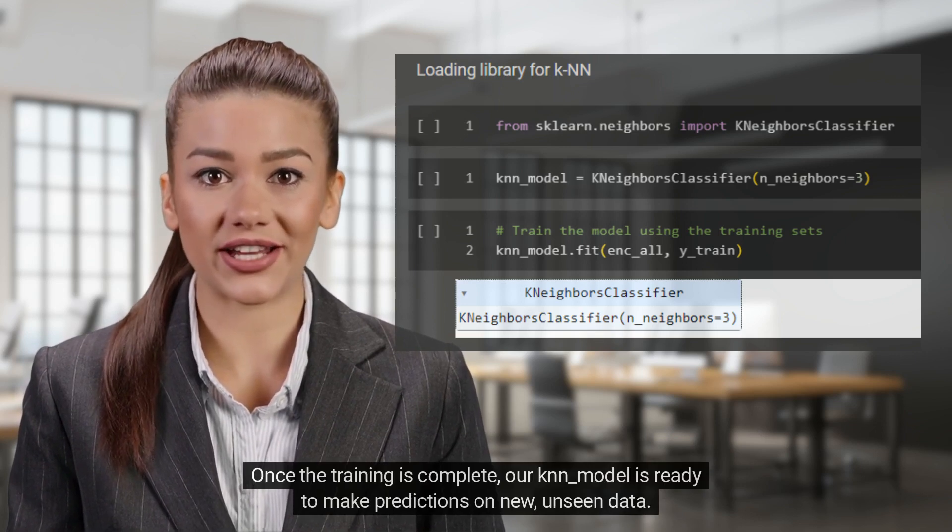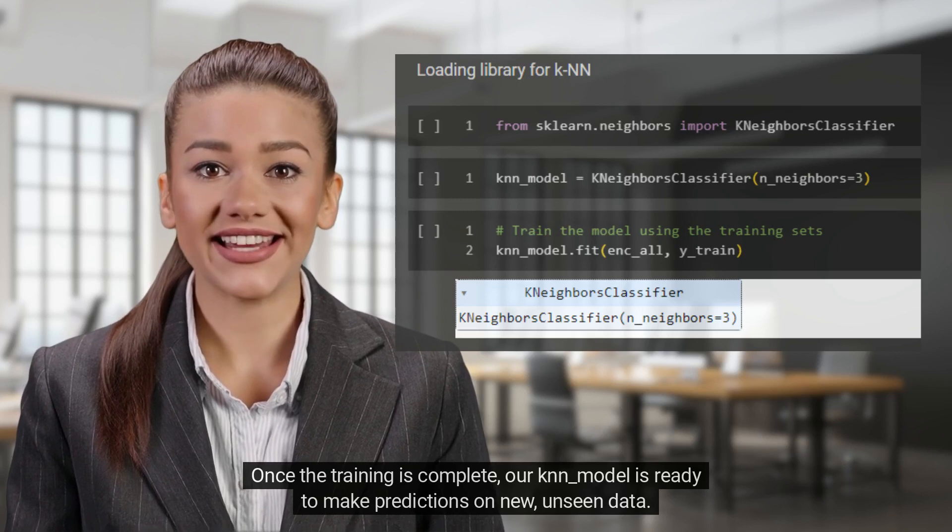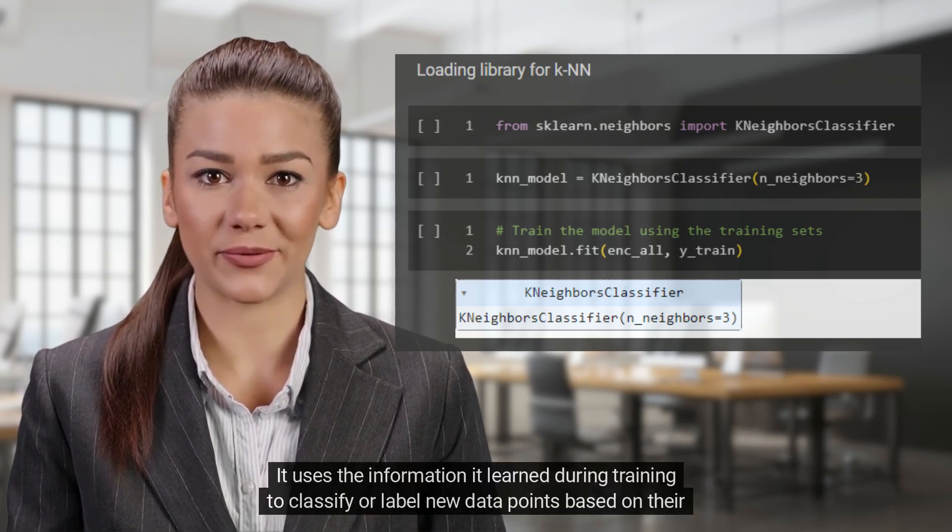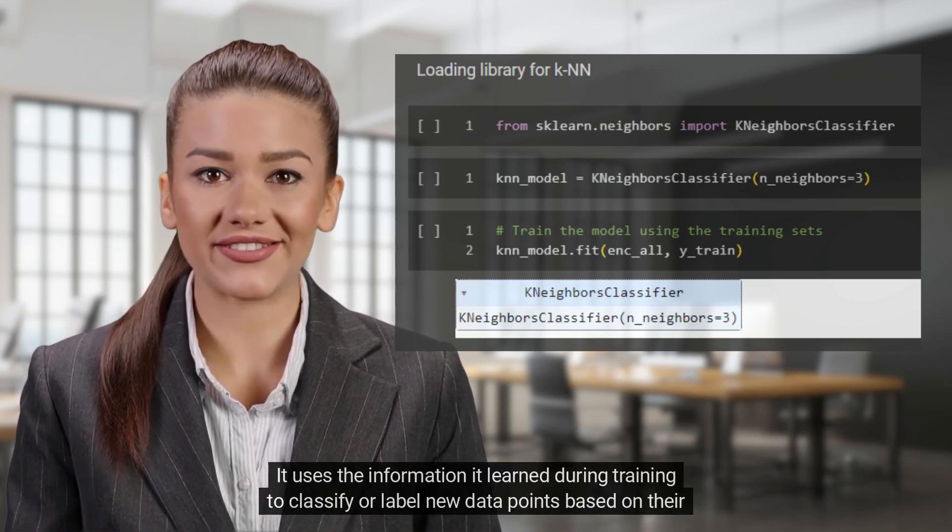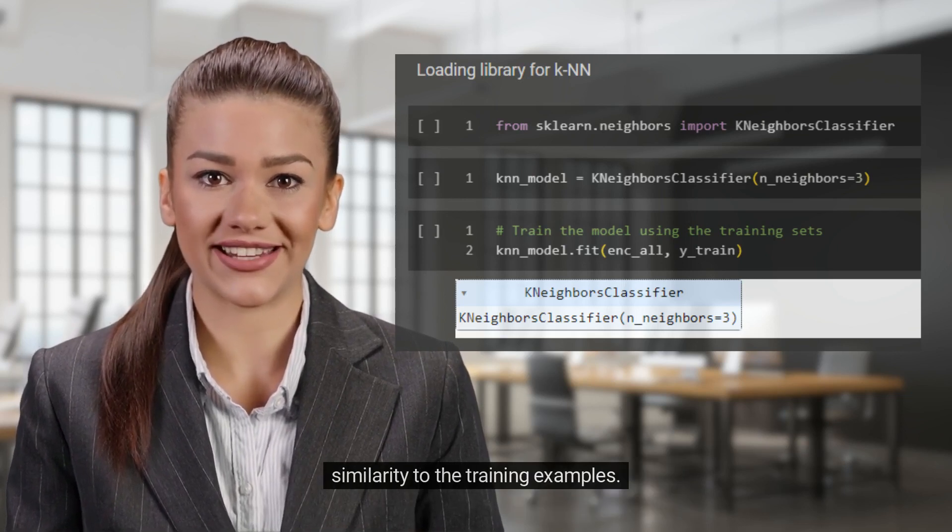Once the training is complete, our knn_model is ready to make predictions on new, unseen data. It uses the information it learned during training to classify or label new data points based on their similarity to the training examples.